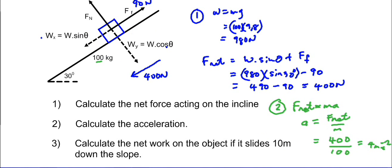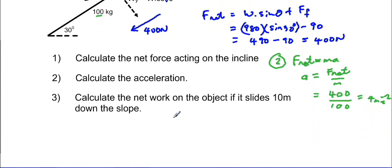So that will be our second answer. And if you take our third sum, number 3, and it says calculate the net work of the object if it slides 10 meters down the slope.